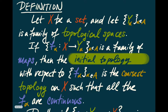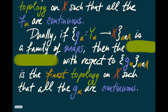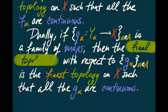Dually, if we have maps not out of X but into X from our Y_alphas — call them G_alpha — then we can have a topology that is the finest topology on X such that all the G_alphas are continuous. This we call the final topology on X relative to the G_alphas.